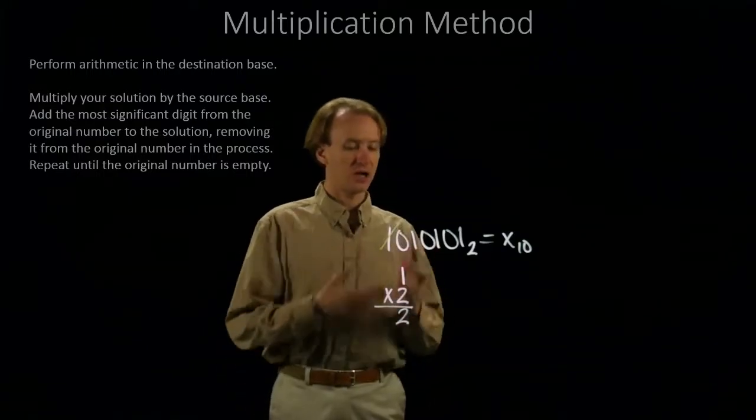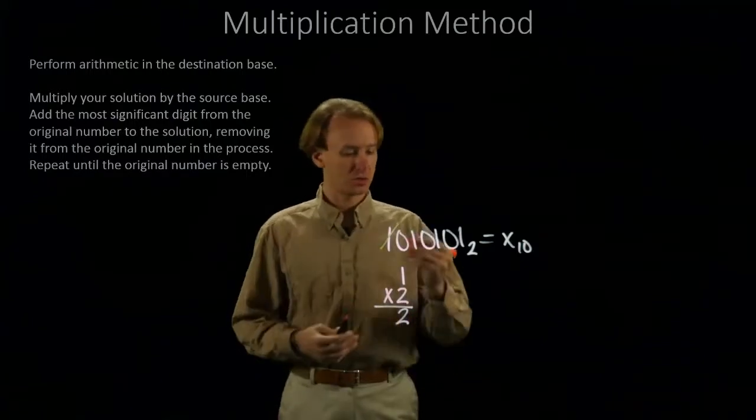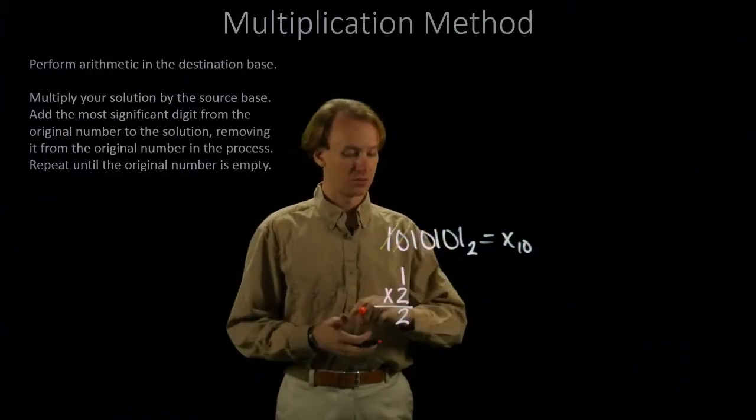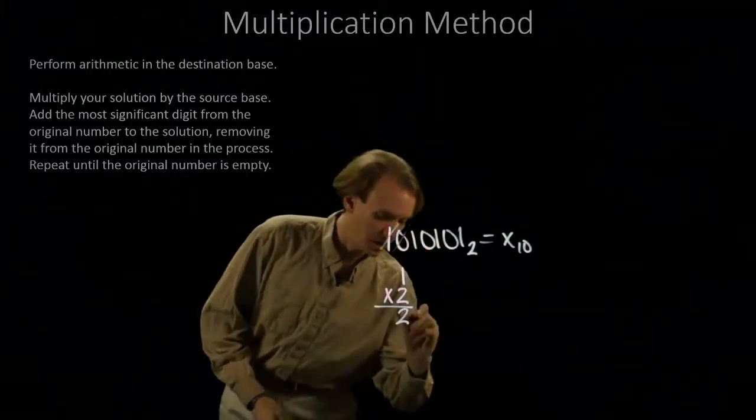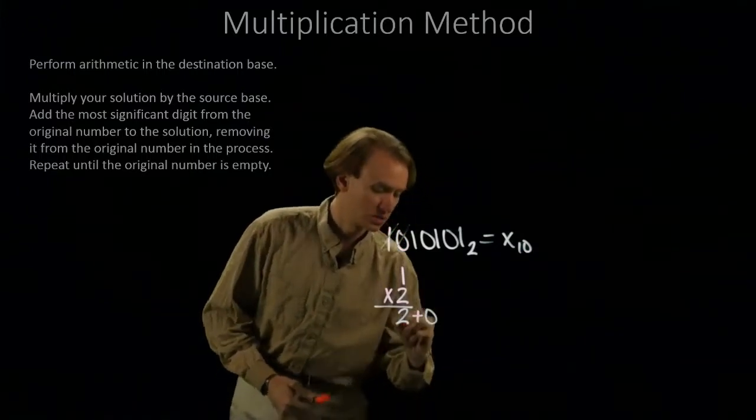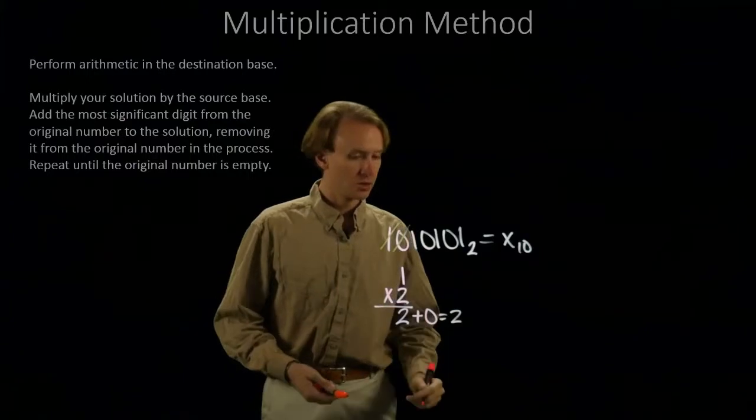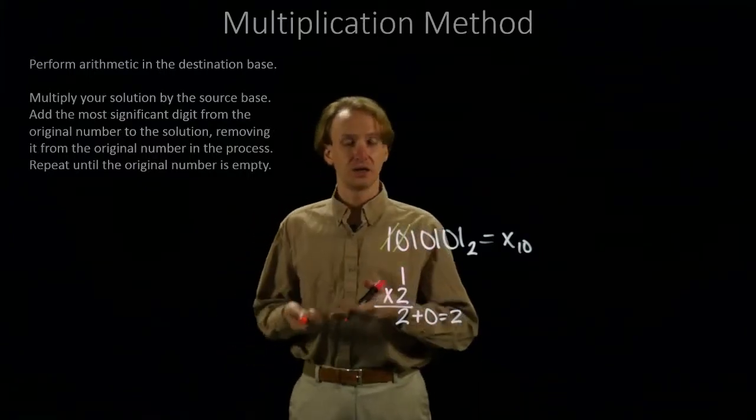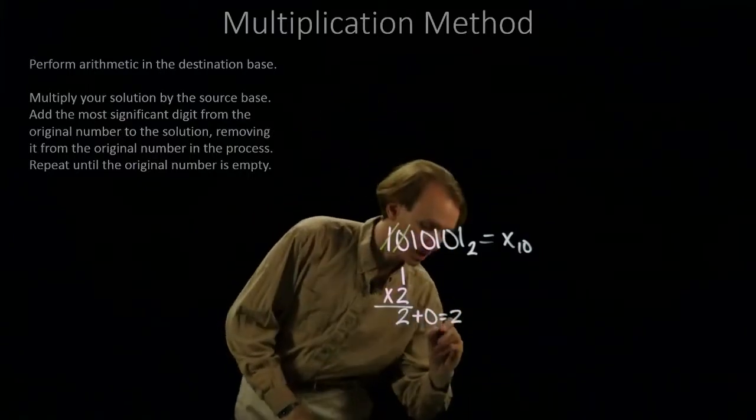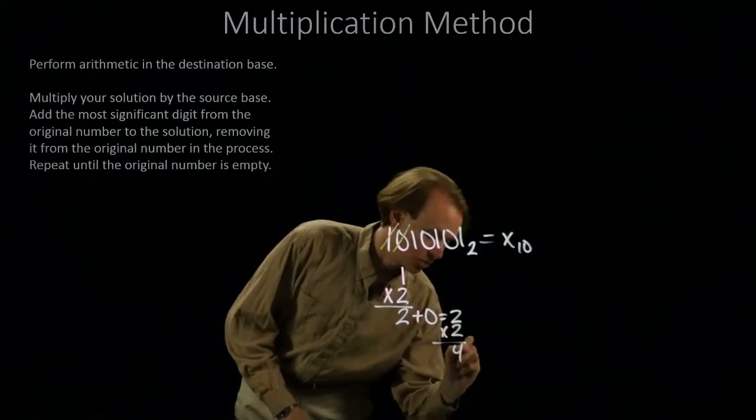And then I'm going to add in the next bit. So, 0, and I'll add 0 to this, which will give me 2. But I'll still go back to the beginning, and I'm going to multiply this by 2 again. So, 2 times 2 is 4.